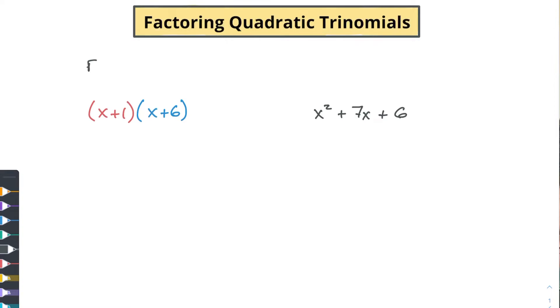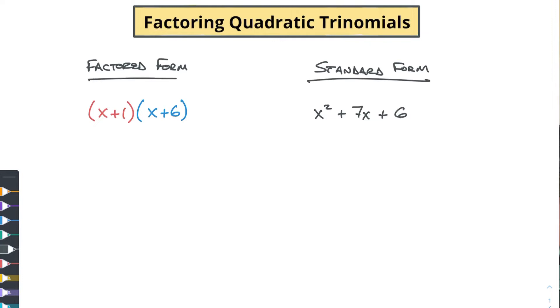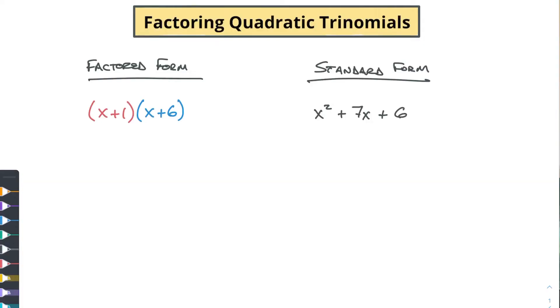I talked about a factored form and a standard form. Based on where I'm putting these, this is the standard form and this is the factored form. What we're going to do is start with the factored form, expand it using the distributive property to get it to standard form, and then take that standard form and move it back to factored form — so we can see how this process works and why we do it. Let's start with our expansion using the distributive property.